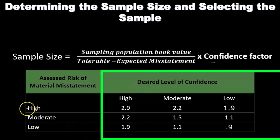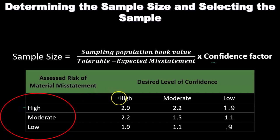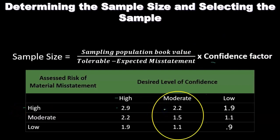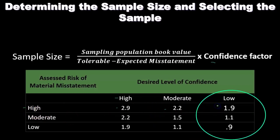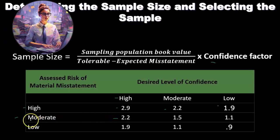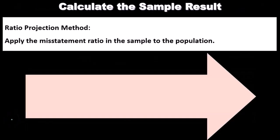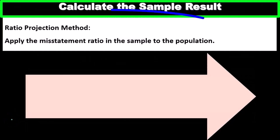The level of confidence is going to be here. If we have a high assessed risk of material misstatement and a high desired level of confidence, we're going to use a higher confidence factor — in this case, 2.9. With a high assessed risk but moderate desired confidence, we'll have a lower factor, and with low desired confidence, a lower factor still. The same pattern applies for moderate risk levels, as you can see in the confidence factor section of the formula.